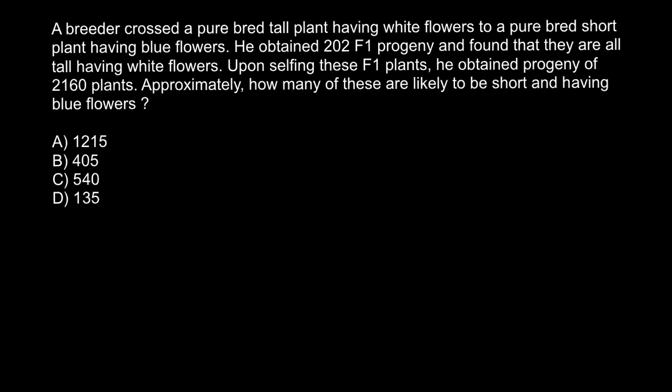Hello and welcome to Nikolai's genetics lessons. Today's problem: a breeder crossed a purebred tall plant having white flowers to a purebred short plant having blue flowers. He obtained 202 F1 progeny and found that they are all tall with white flowers. Upon selfing these F1 plants he obtained progeny of 2160 plants. Approximately how many of these are likely to be short and having blue flowers?